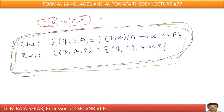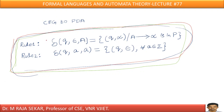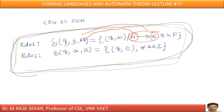This is similar to lecture number 66. To understand this conversion, we should understand two rules. Rule number one: if there is a production of the form capital A goes to alpha, I must write it as delta of (Q, epsilon, A) = (Q, alpha).